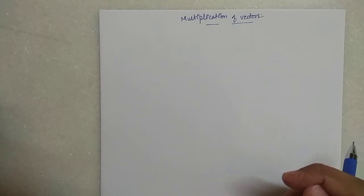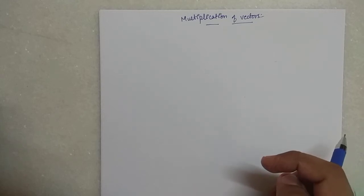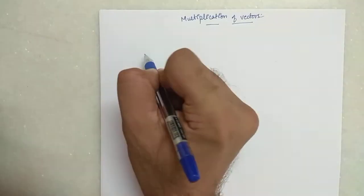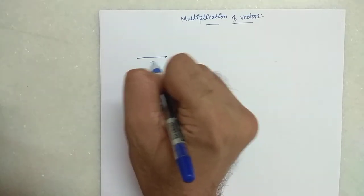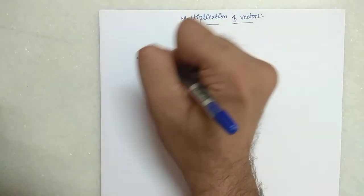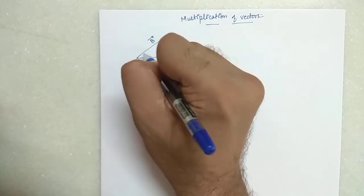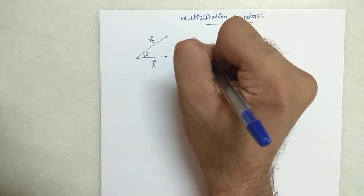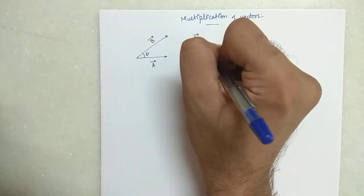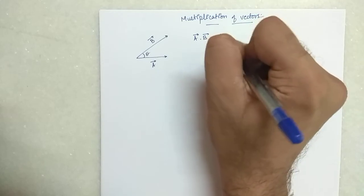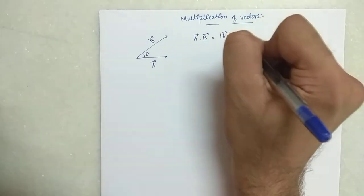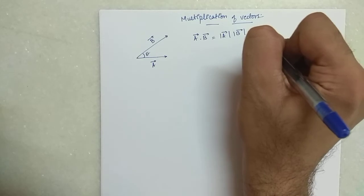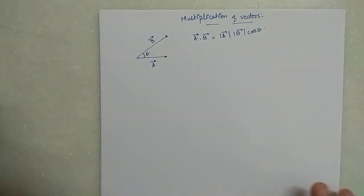Hello students, in this video we will continue further with multiplication of vectors. In the previous video I had given you an idea about dot product — how do you find out the dot product and what dot product means. Now if you have two vectors a and b and the angle theta is the angle between them, then a dot b is calculated as magnitude of a into magnitude of b into cos theta.